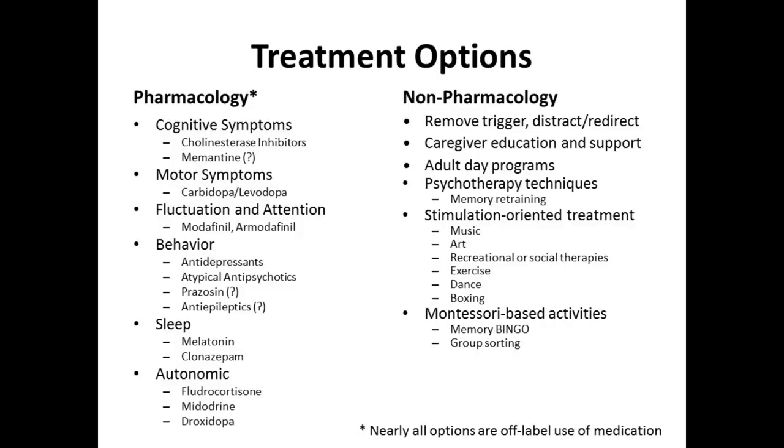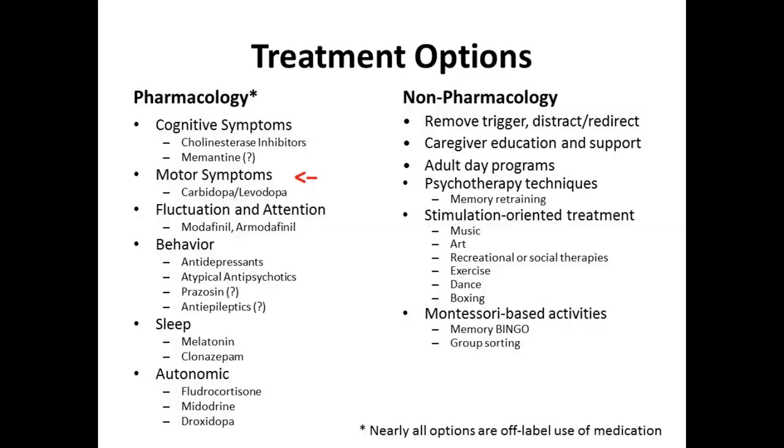In the last couple of minutes, I'll mention some things about treatment. There are no approved therapies for Lewy body dementia, so we use medications from other diseases. Most of what I'll say is considered off-label because they're not approved treatments. We can treat the cognitive symptoms using medicines available for Alzheimer's disease — the cholinesterase inhibitors, like donepezil or Aricept, rivastigmine or Exelon, and galantamine. Those medicines can be effective at slowing down some of the symptoms, though they don't reverse them. The data for memantine or Namenda is equivocal — we use it, but it doesn't have very strong data in Lewy body disease.